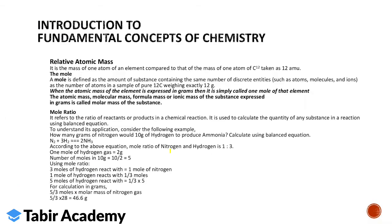Now let's start with relative atomic mass. Relative atomic mass is the mass of one atom of an element compared to the mass of one atom of carbon-12. Carbon-12 isotope is taken as 12 atomic mass units. Mole is defined as the amount of substance containing the same number of discrete entities.